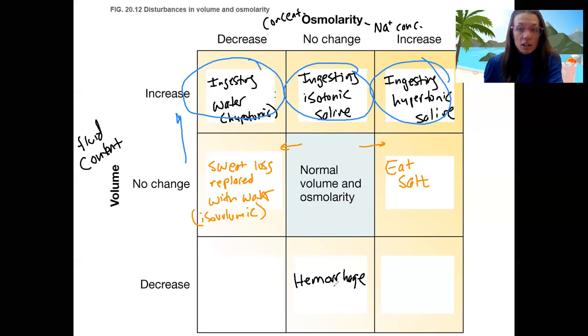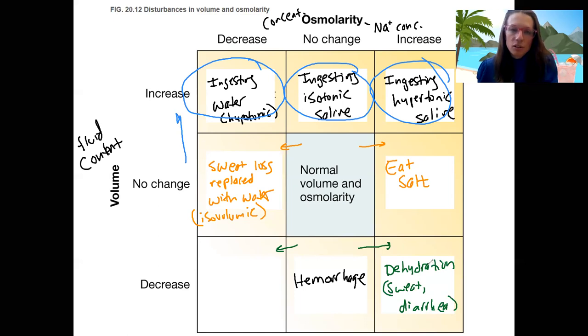Then we've got decreases in blood volume that also change osmolarity. I would argue that this is dehydration, like sweat loss or diarrhea. These are things that are going to increase osmolarity because the thing we are excreting is hypotonic. But we're also losing fluids.